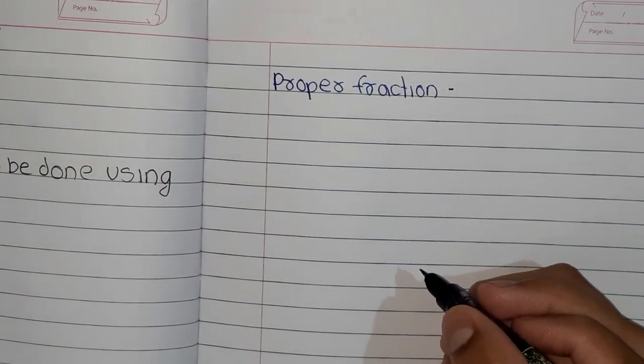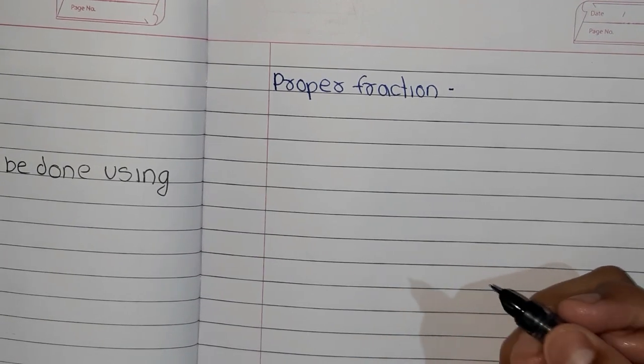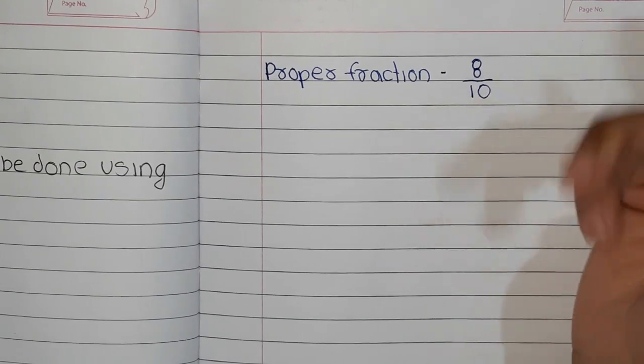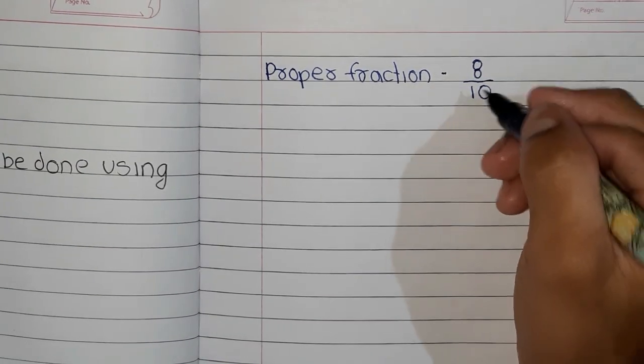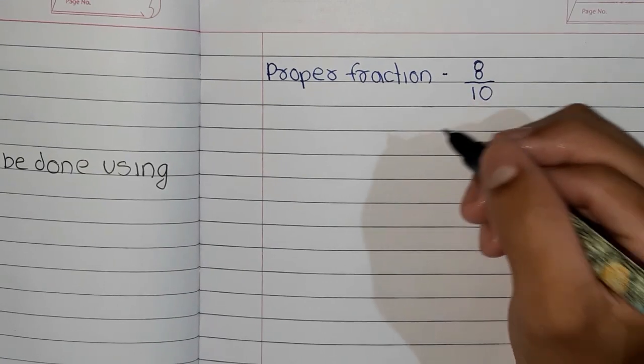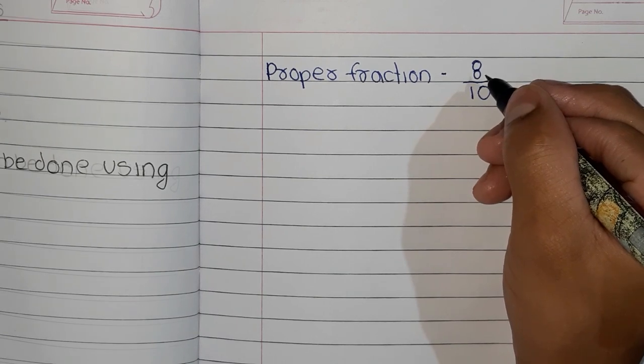Proper fractions are less than one whole. Let's take an example: 8 by 10. Here 10 is called as one whole, out of 10 parts, 8 are taken. So in general words, proper fraction means the numerator should be smaller than the denominator.